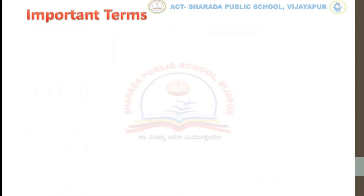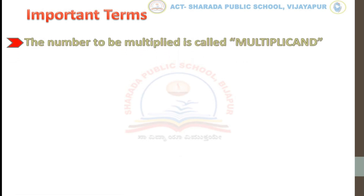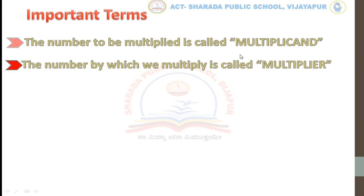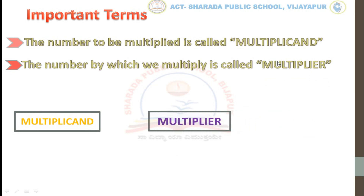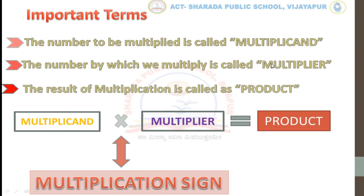Let's see some important terms. Here we have 3 times 4. The number to be multiplied is called the multiplicand, and the number by which we multiply is called the multiplier. Multiplicand into multiplier gives us the product. The result of multiplication is called the product.